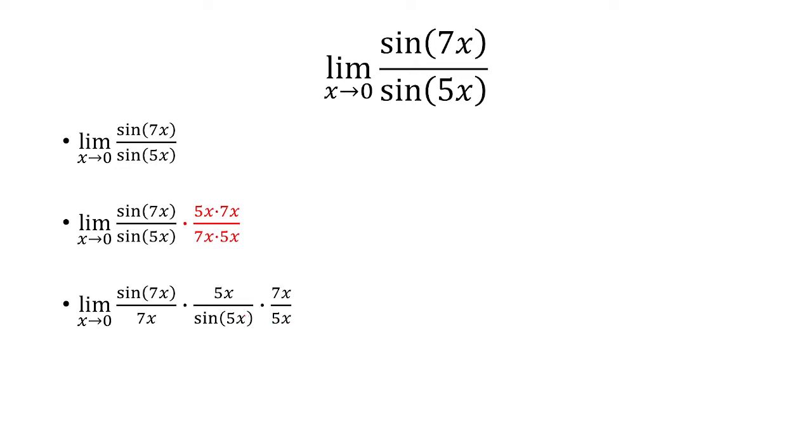Using the product rule, I can split this up into three separate limits. The reason I'm doing this is because whenever you have a limit like this, sine of ax over ax, that limit is always going to be 1.